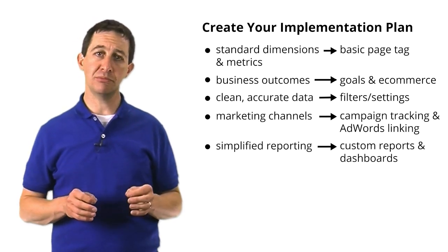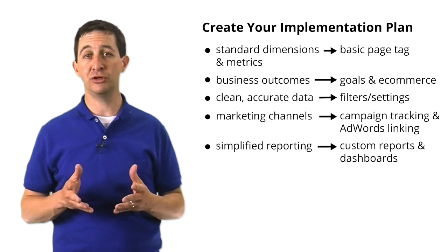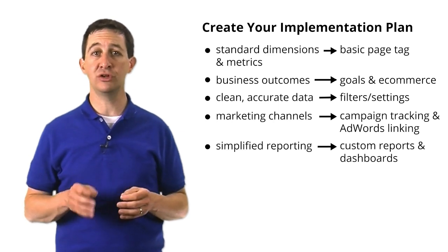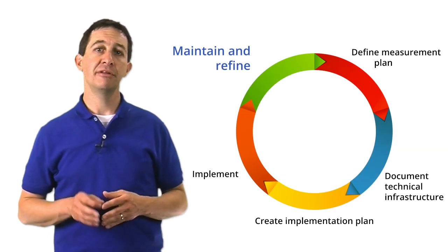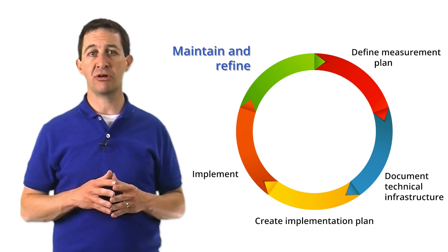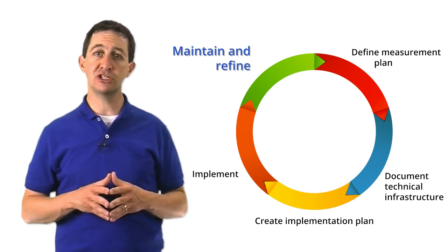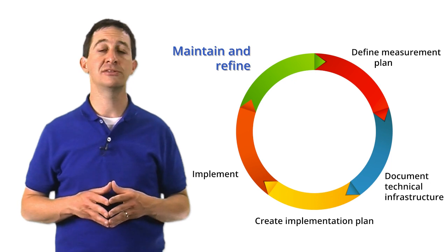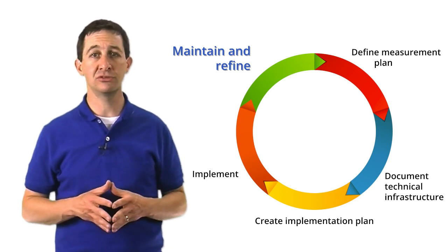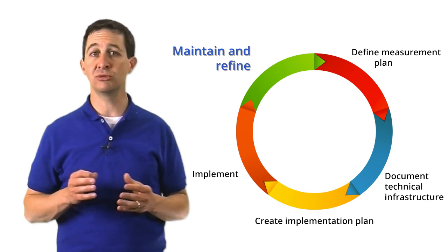Usually, you will combine the measurement plan, technical information, and Google Analytics features into a document that details the implementation recommendations for your business. The result of this process is a reliable, accurate set of data that helps you understand the performance of your business day in and day out. The final step of the measurement planning cycle is to maintain and refine your plan. This is a really important step because your business requirements and your technical environment can change over time. Without a team to maintain your measurement plan, your data won't keep pace with your reporting needs. Also, in your first iteration, you may not be able to implement your entire plan due to time or resource constraints. If you have a robust implementation plan, you may consider tackling it in phases by prioritizing the most important features first.